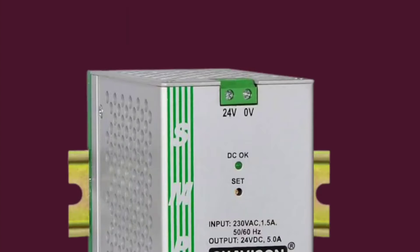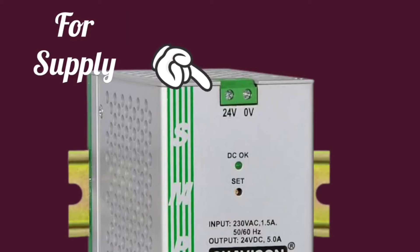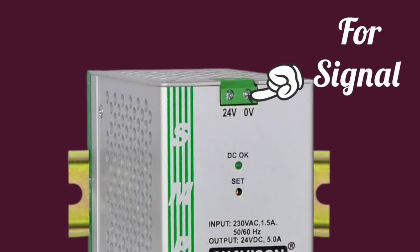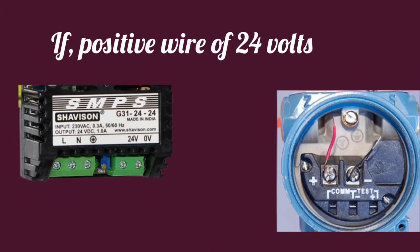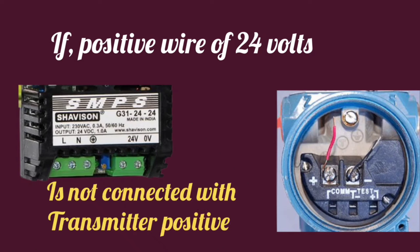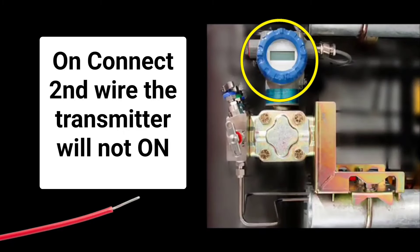We use the positive wire of 24V for supply, meaning for transmitter supply, and the other wire is used for signal. If we do not connect the positive wire of 24V supply, or the one on which 24V is written, to the positive terminal of the transmitter, if we connect the second wire to the positive of the transmitter, then the transmitter is not on.